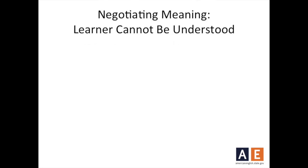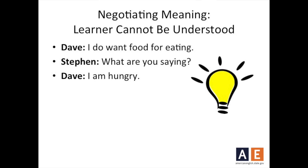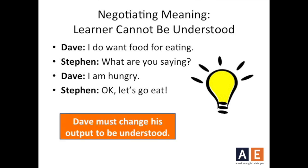The same thing can happen when a learner cannot be understood. Let's pretend that Dave is still an English language learner and he says to me, 'I do want food for eating.' Not quite understanding what Dave meant, I asked him, 'What are you saying?' Dave recognized that I did not fully understand what he said and therefore changes his previous statement and instead says, 'I am hungry.' Now I understand what Dave is saying and reply with, 'Okay, let's go eat.' Much like in the previous example, one of the people in the conversation needed to modify their speech in order to be understood.